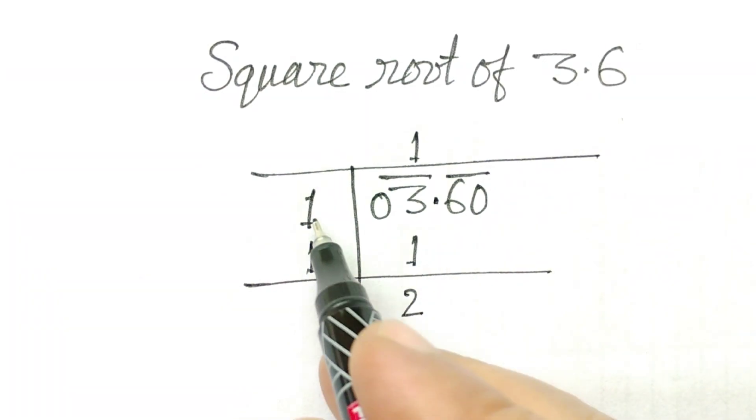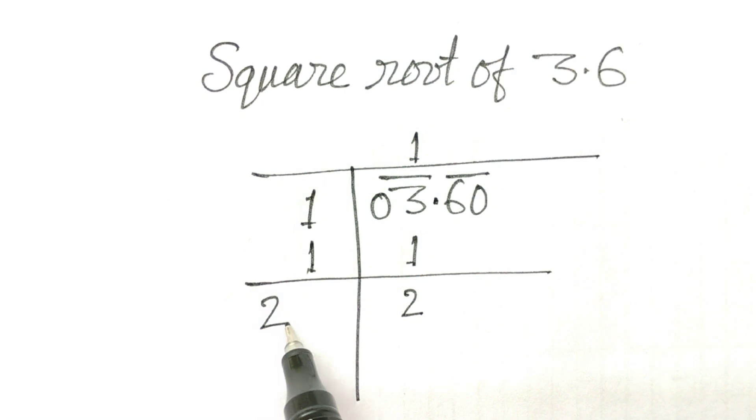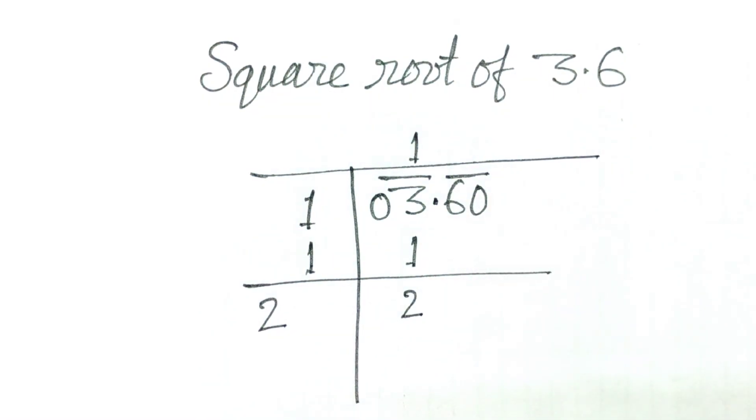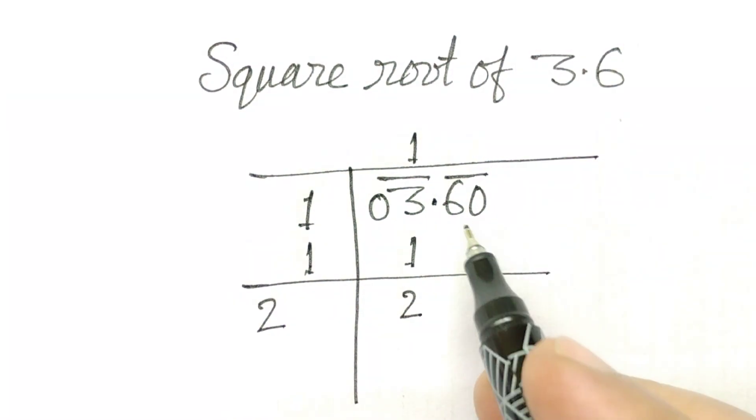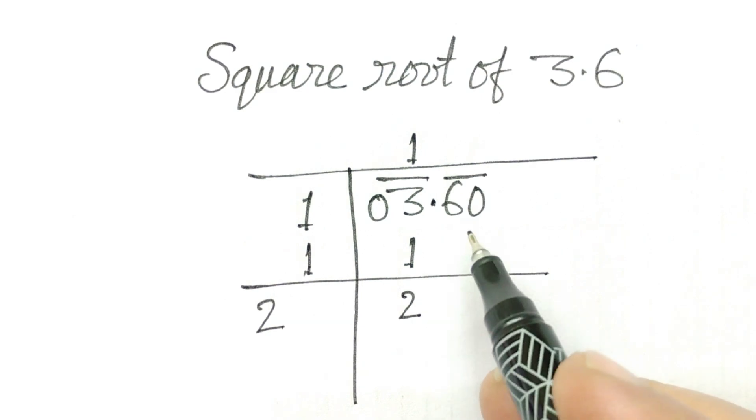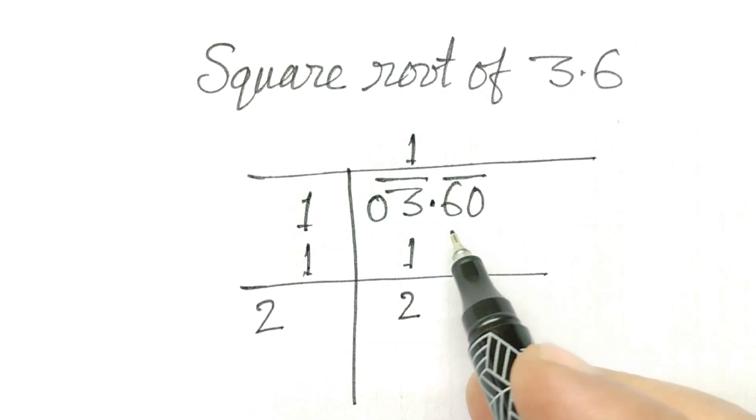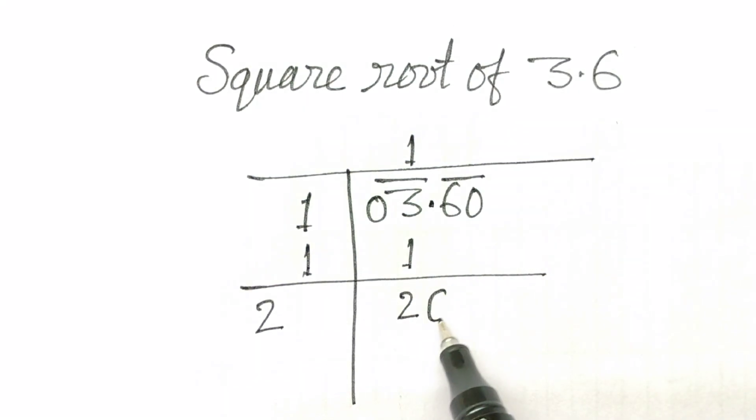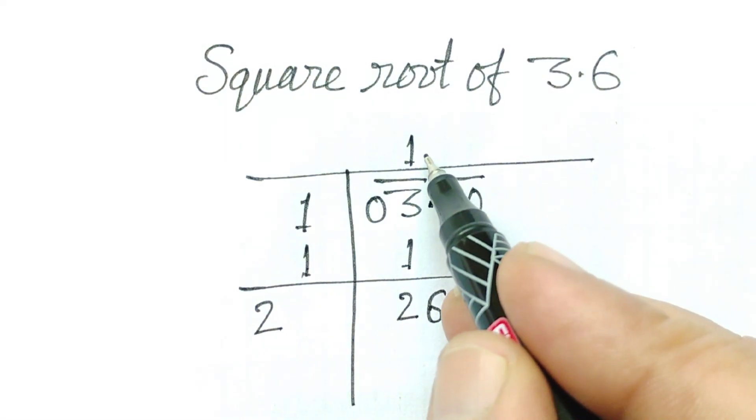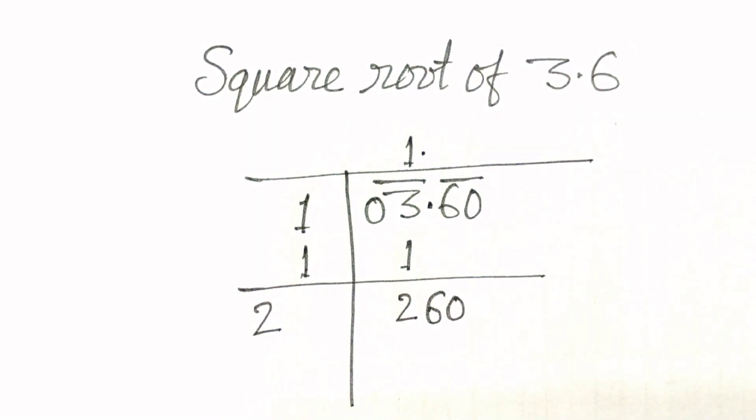And here, 1 plus 1, 2. And here, what will we do now? We will write down number in pairs. So we will write down 6, 0 with pair. So here, we will make point now.